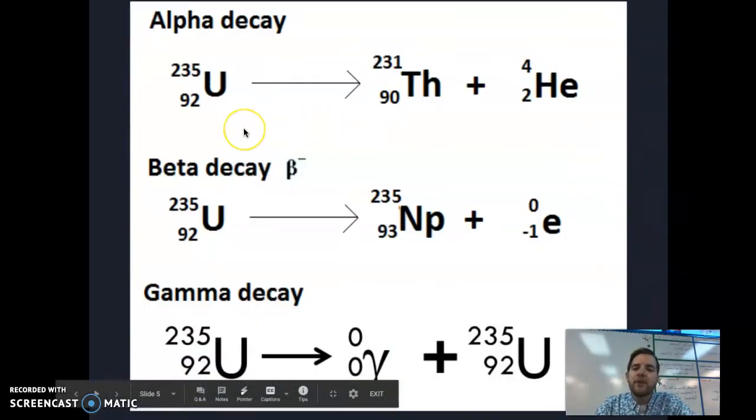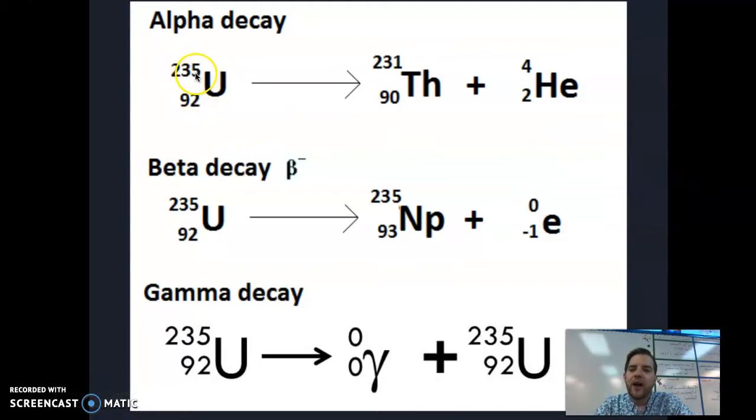Here's an example of alpha decay. We started with uranium-235 with 92 protons, and it has undergone alpha decay. We see an alpha particle, a helium with four total mass and two protons. This came out of the uranium. The four total mass came out of 235, leading to 231, because 235 minus 4 is 231.